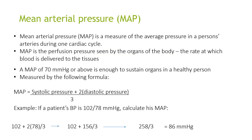Mean arterial pressure is a measure of the average pressure on a person's arteries during one cardiac cycle. It is the perfusion pressure seen by organs of the body — the rate at which blood is delivered to the tissues. A mean arterial pressure of 70 mmHg or above is enough to sustain organs in a healthy person, and it is measured by the formula: mean arterial pressure equals systolic pressure plus two times the diastolic pressure, divided by three.